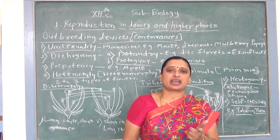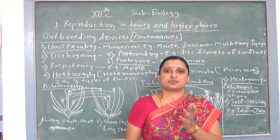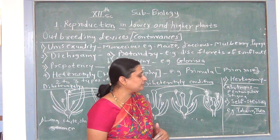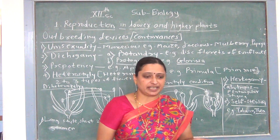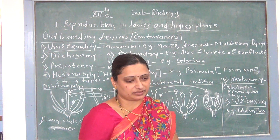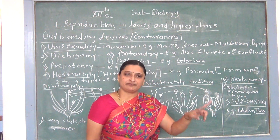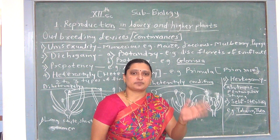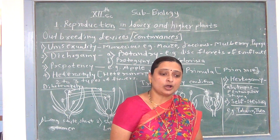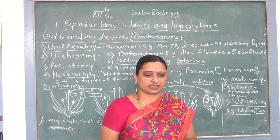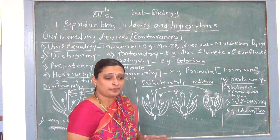The sixth device is self-incompatibility, also called genetic sterility. There is a genetic mechanism or genetic barrier by which same-type pollen grains do not germinate on the stigma of the same species. This is called genetic incompatibility or genetic sterility. Examples are tobacco and Thea. These are the outbreeding devices — contrivances for cross-pollination.